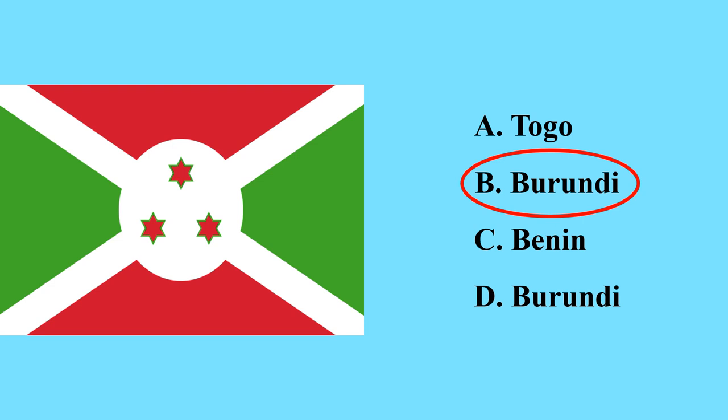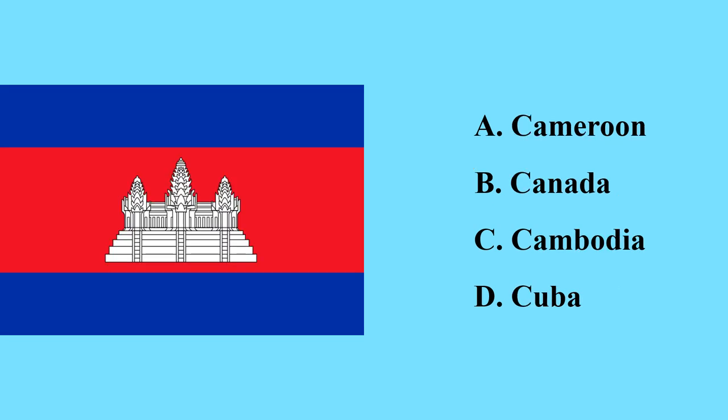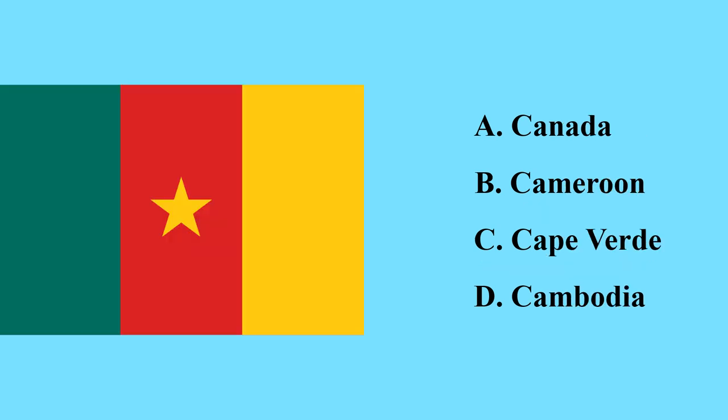This flag belongs to Burundi, a smaller country in Africa which has land borders with Rwanda and the Democratic Republic of Congo. This flag belongs to Cambodia — Cambodia is a country in Asia.